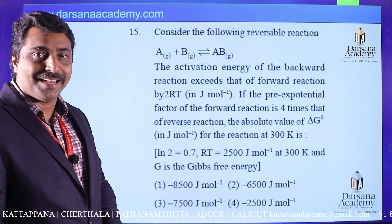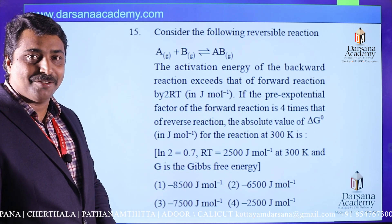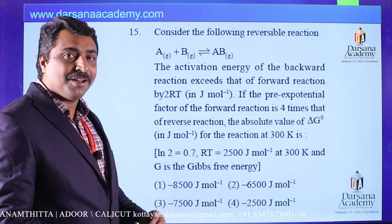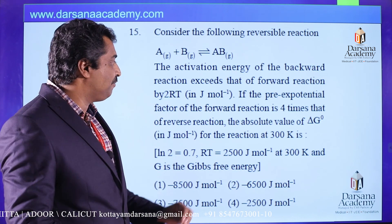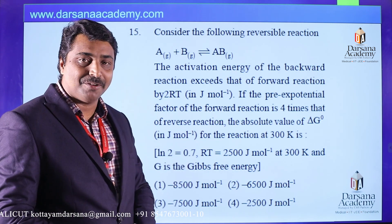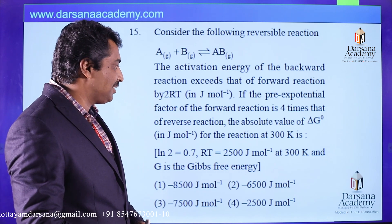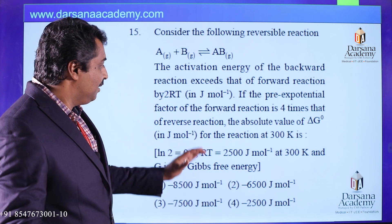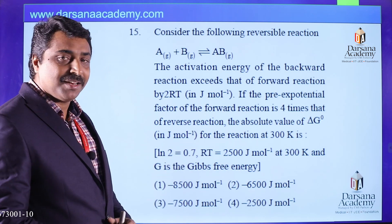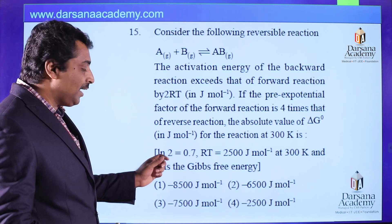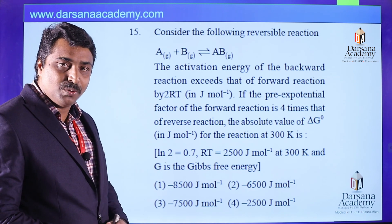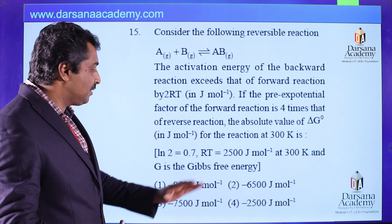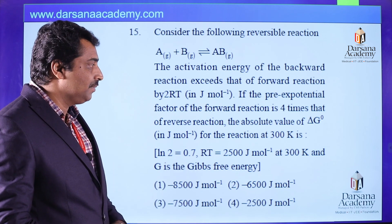The pre-exponential factor of the forward reaction is four times that of the reverse reaction. We need to find the absolute value of delta G zero for the reaction at 300 Kelvin. It is given that the natural logarithm of 2 is 0.7, and the value of RT at 300 Kelvin is also given.